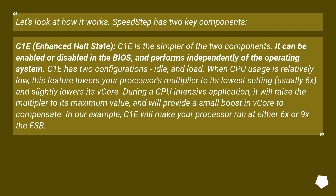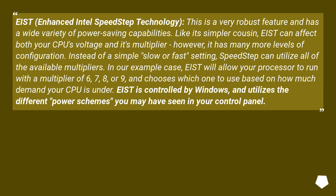During a CPU-intensive application, it will raise the multiplier to its maximum value and provide a small boost in vcore to compensate. In our example, C1E will make your processor run at either 6x or 9x the FSB. The second component, EIST (Enhanced Intel Speedstep Technology), is a very robust feature with a wide variety of power-saving capabilities. Like C1E, it can affect both CPU voltage and multiplier, but has many more levels of configuration. Instead of a simple slow or fast setting, Speedstep can utilize all available multipliers — 6, 7, 8, or 9 — and chooses which one to use based on how much demand the CPU is under.